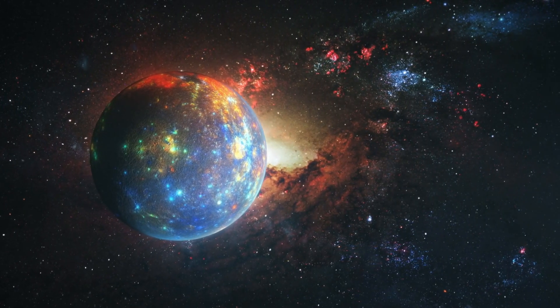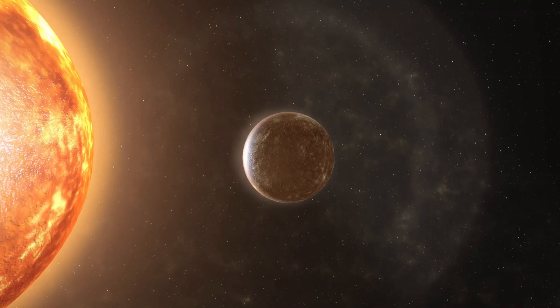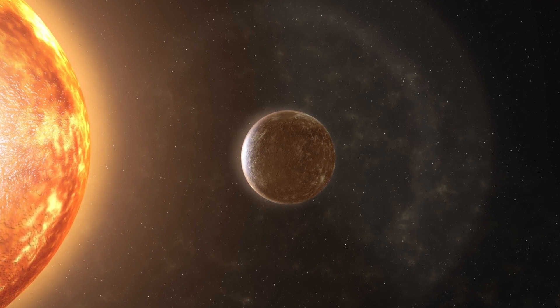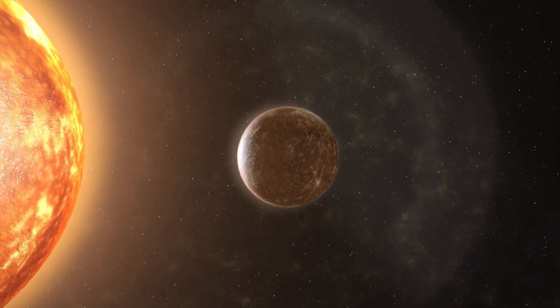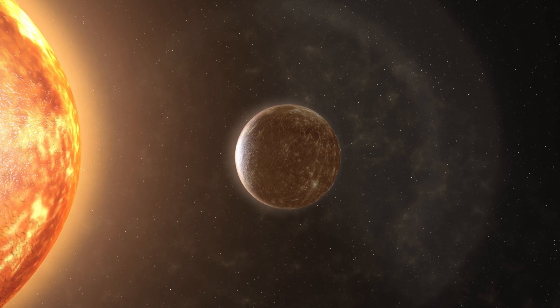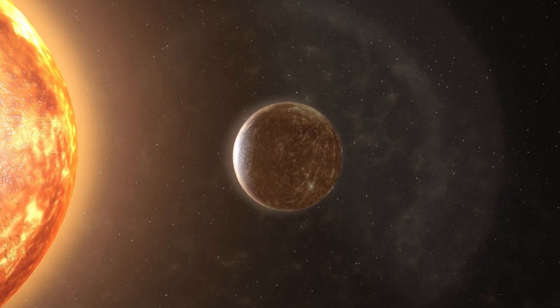Mercury, the speedy planet. Mercury is the closest planet to the sun. It's super hot during the day and very cold at night. Since it's so close to the sun, it moves the fastest around it.